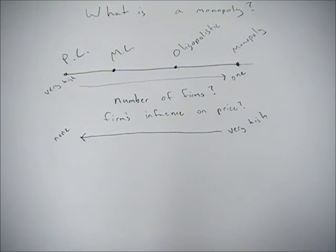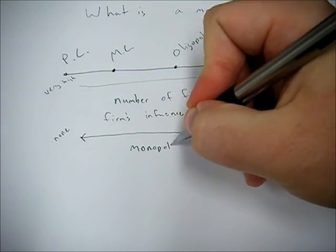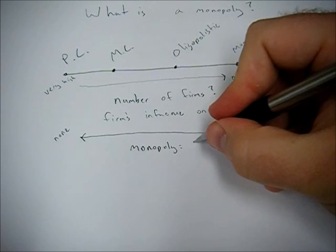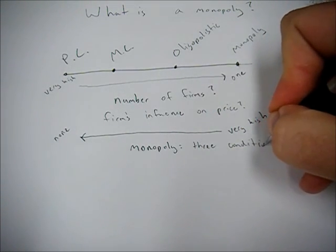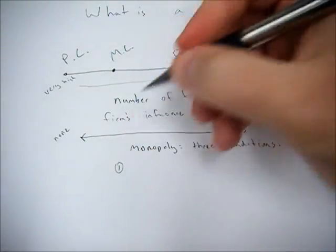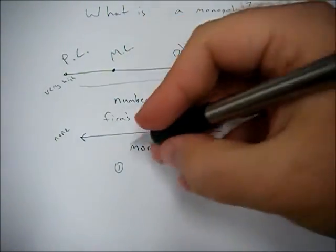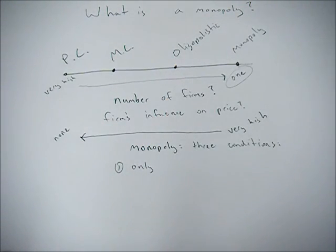So in order for a monopoly to hold, there are three conditions. The first condition is that only one firm sells a product or good. That's pretty easy.